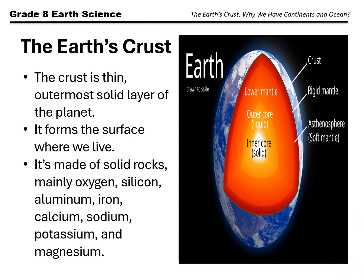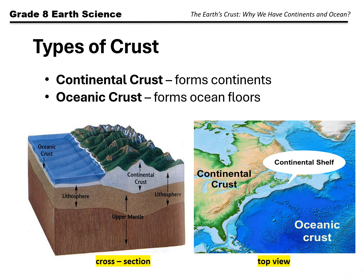The Earth's crust is very thin compared to the rest of the Earth, just like an apple skin compared to the entire fruit. It makes up less than 1% of the Earth's total volume, but it is the layer where we live and where all landforms exist. Beneath the crust lies the mantle, and below the mantle is the core. This structure allows the crust to constantly move. Being the outermost solid layer of the Earth, the crust is divided into two main types: continental crust and oceanic crust.